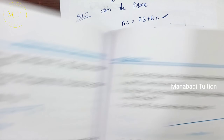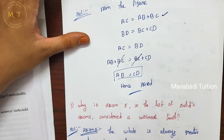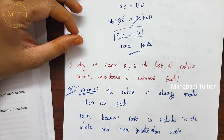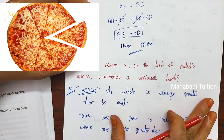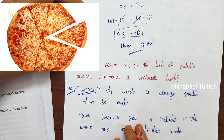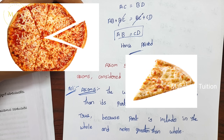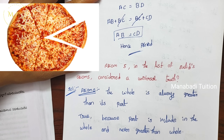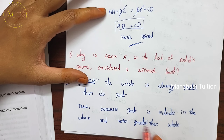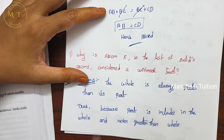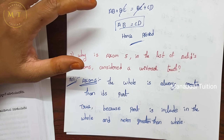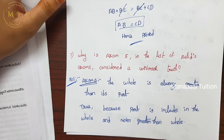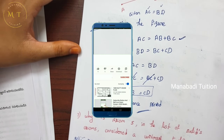Question seven uses Euclid's axiom five: the whole is always greater than its part. For example, a whole pizza is greater than a single slice, because the part is included in the whole and can never be greater than the whole. So the whole is always greater than its part. This completes the problem.